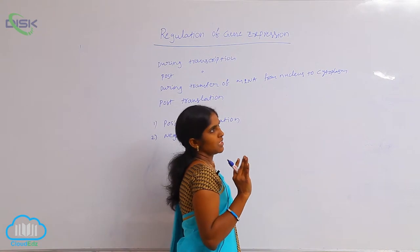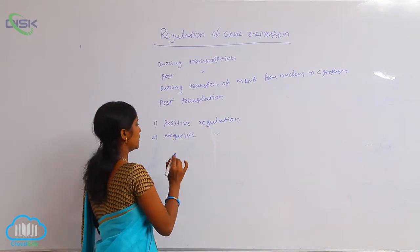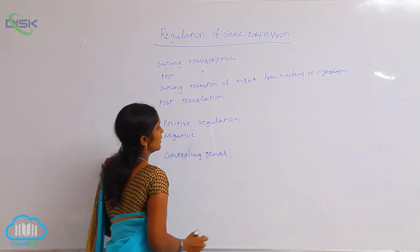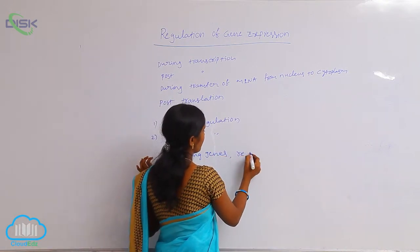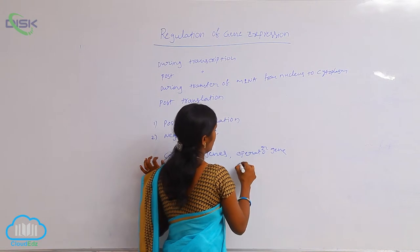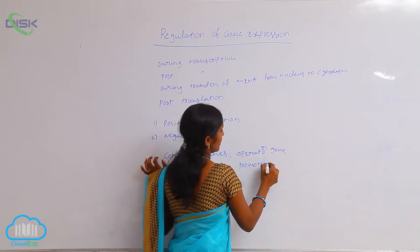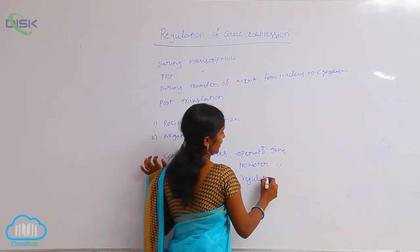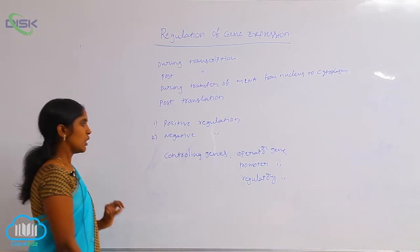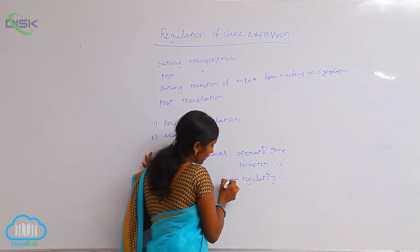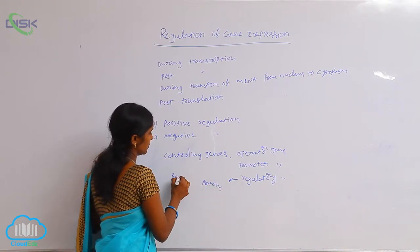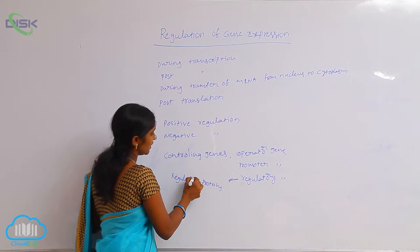Three genes are most important for regulation — they are controlling genes. The controlling genes are: the operator gene, the promoter gene, and the regulatory gene. These three genes control transcription. The regulatory gene produces some proteins, called regulatory proteins, which regulate the transcription process.